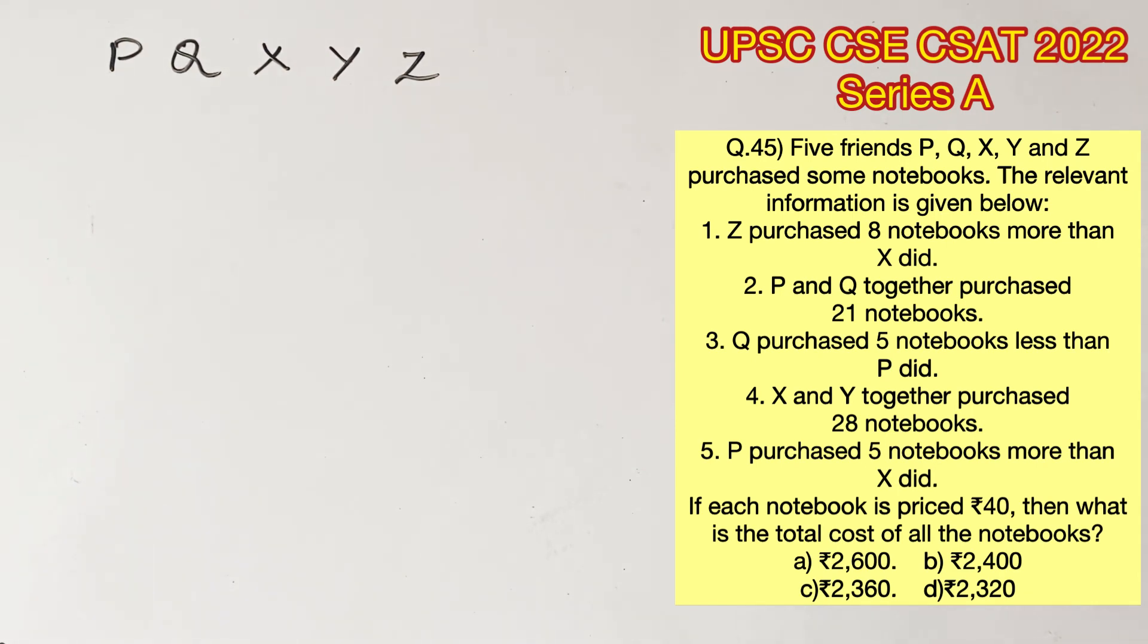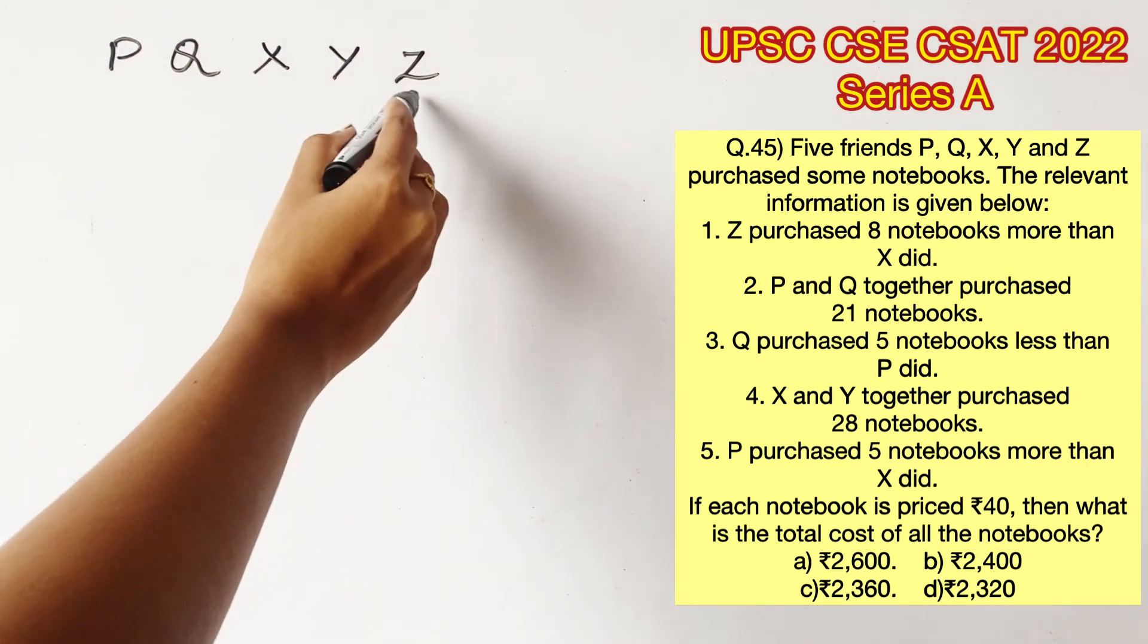Let's consider that P is the number of notebooks P has purchased, Q is the number of notebooks Q has purchased, X is the number of notebooks X has purchased and so on.